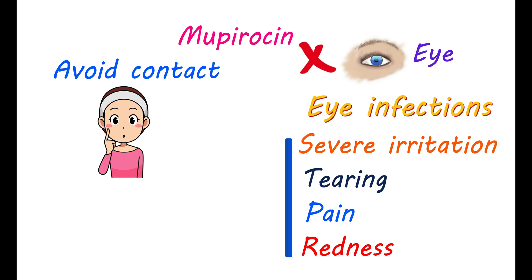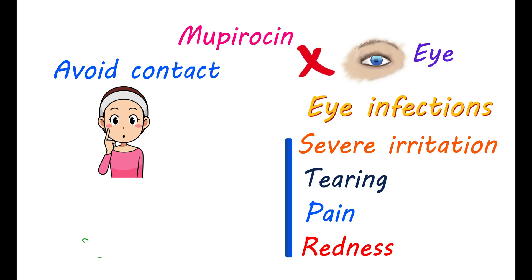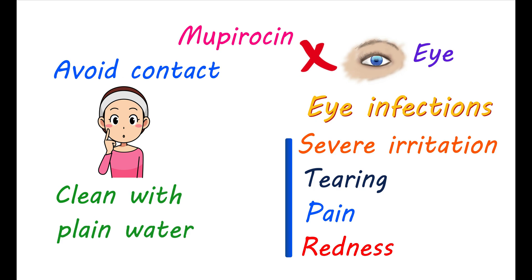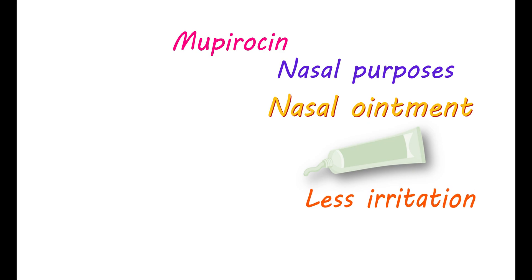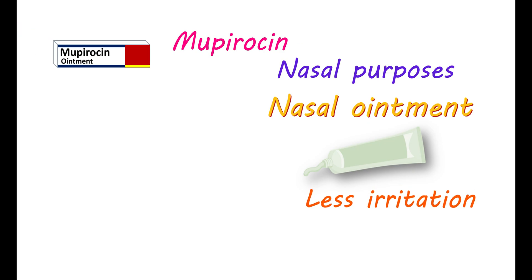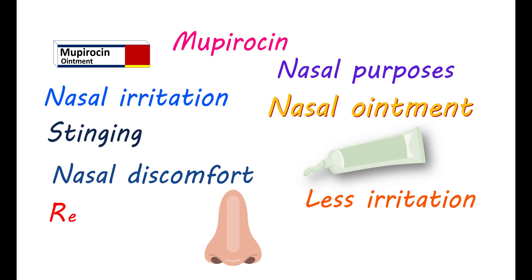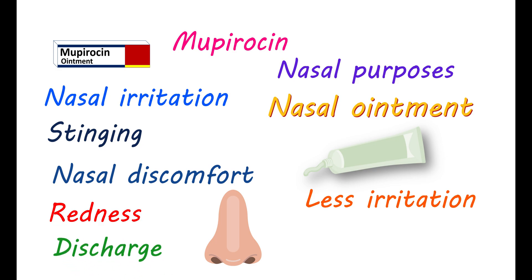In case of any accidental contact of this medication with the eye, immediately clean it with plain water. After application of the ointment, wash your hands thoroughly to avoid contact with the eye. Mupiracin can also be used for nasal purposes. However, the ointment specifically used for that purpose is different from other ointments used topically on skin. Nasal ointment is mild and causes less irritation. If you use Mupiracin ointment intended for skin and apply it to the nose, it may cause serious nasal irritation and stinging, resulting in nasal discomfort, redness, and discharge. Therefore, carefully check the label for which purpose it is indicated.